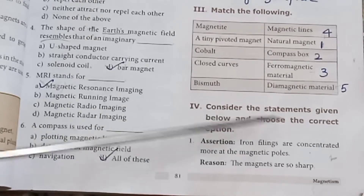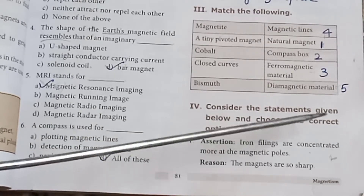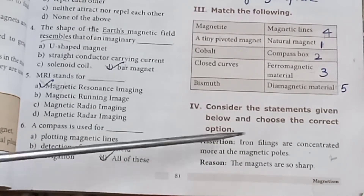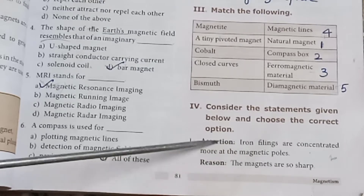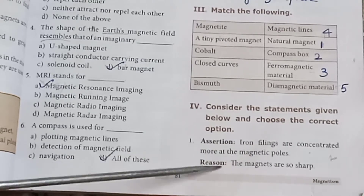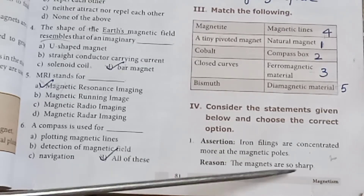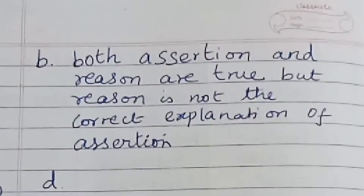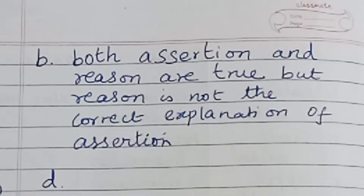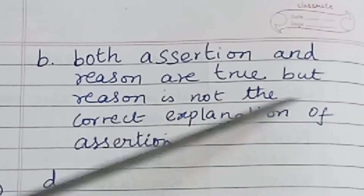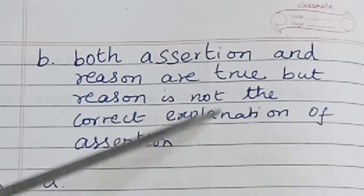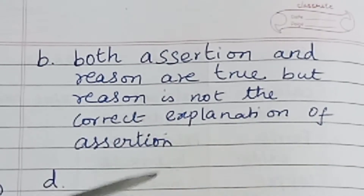Assertion and Reason — Question 1: Assertion: Iron filings are concentrated more at the magnetic poles. Reason: The magnets are strongest there. Answer: B — Both assertion and reason are true, but the reason is not the correct explanation of the assertion.